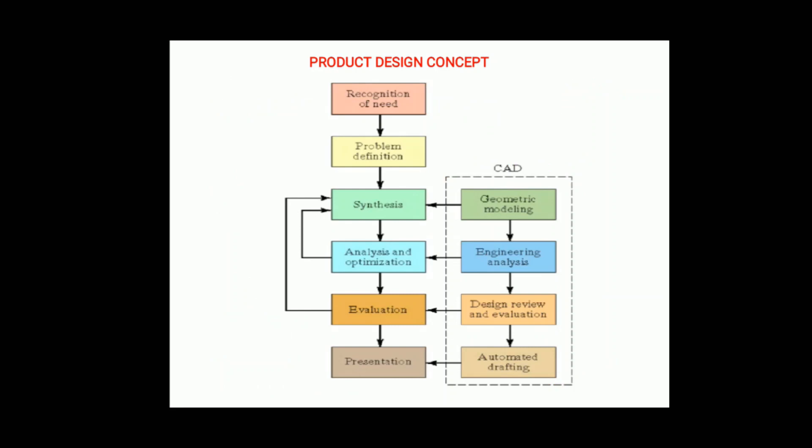Next is the product design concept. Product design is defined as a process to describe a machine or mechanical system to perform a specific function effectively and efficiently, using scientific principles, technical information, and imagination of the designer. A designer uses principles of basic engineering sciences such as physics, mathematics, statics, dynamics, and heat and fluid flow.